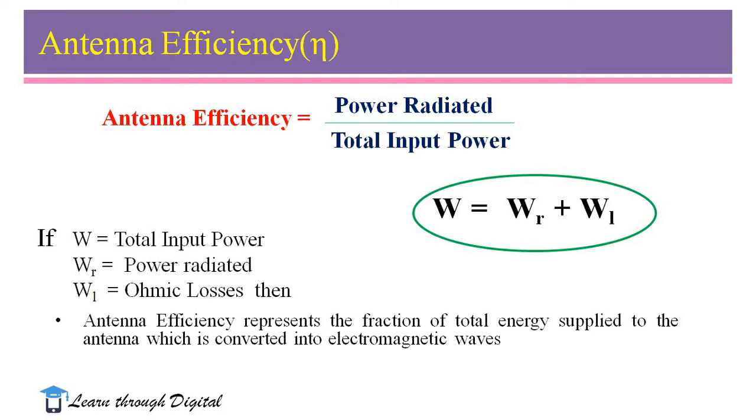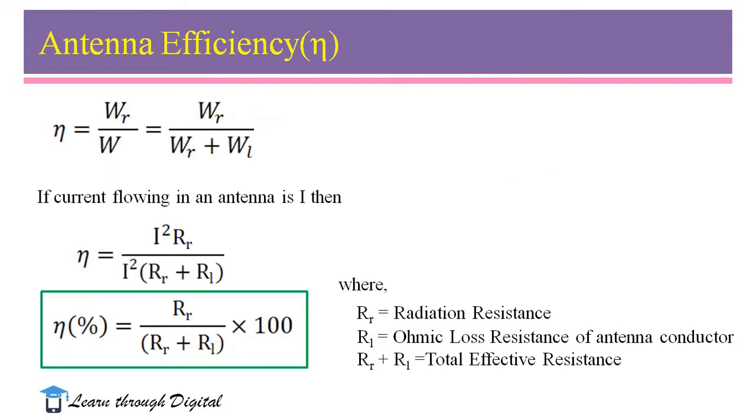Here, this antenna efficiency represents the fraction of total energy supplied to the antenna which is converted into electromagnetic waves. Here, I am representing antenna efficiency in terms of radiation resistance and loss resistance. η equals power radiated to the total input power.